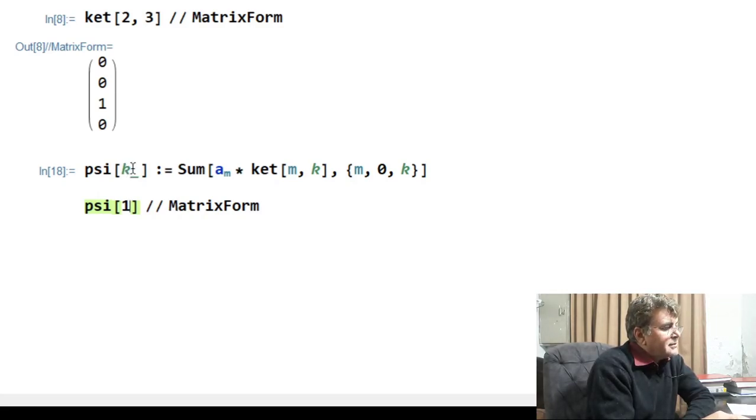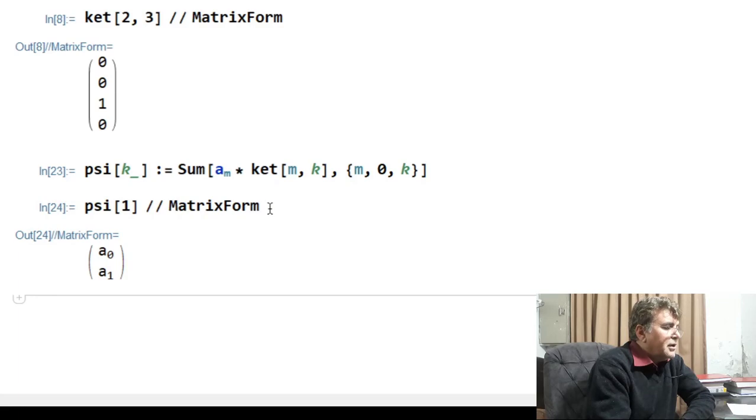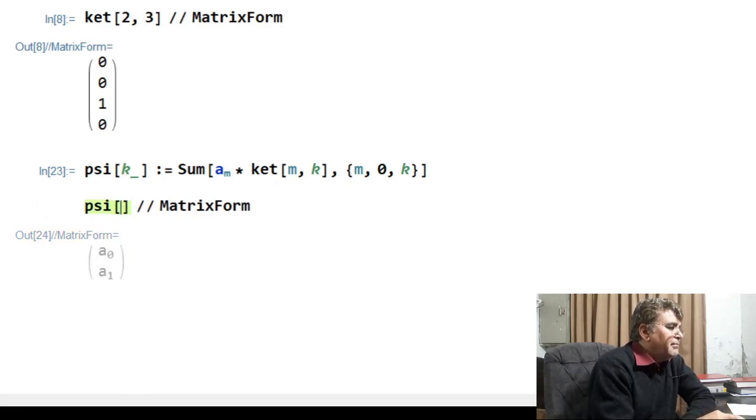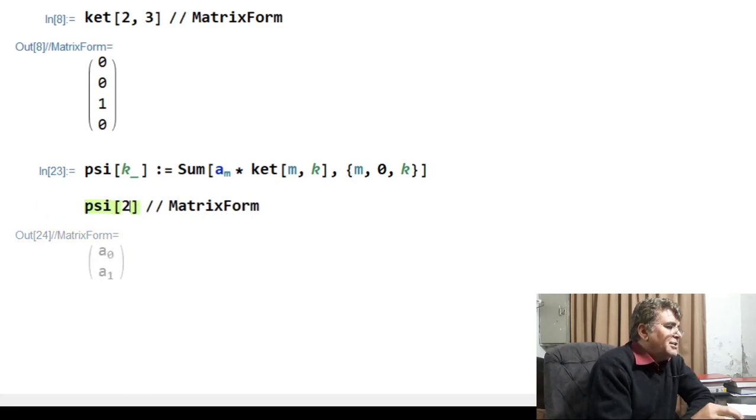If I want to write superposition state for any dimension, I just need to change the value of this argument to that corresponding dimension. For example, in the present case, I have set that to 1 and setting it to 1 will give me the superposition state for a qubit. So, if I run this function and then I run this one, I will get the superposition state of a qubit. Where a_0 and a_1 are the probability amplitudes. If I change the argument of function psi from 1 to 2,